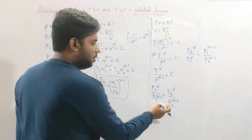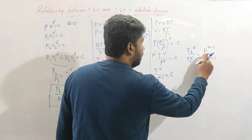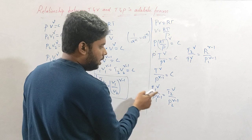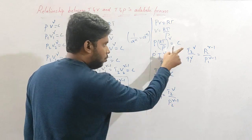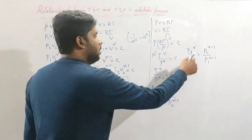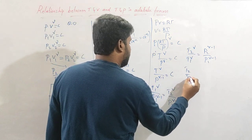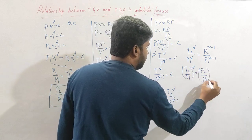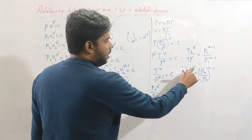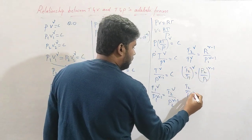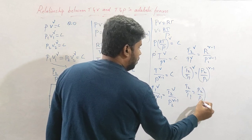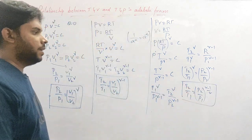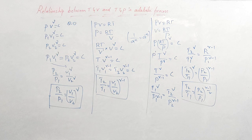Rearranging the terms — P₂ here and T₁ here — I get T₂/T₁ = P₂/P₁, and taking γ to the other side: T₂/T₁ = (P₂/P₁)^((γ−1)/γ). This is another relation in terms of temperature and pressure in case of an adiabatic process. Thank you.